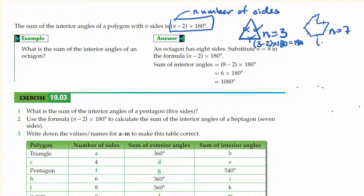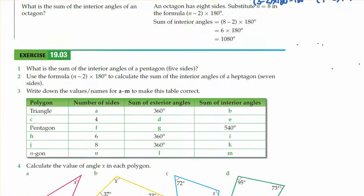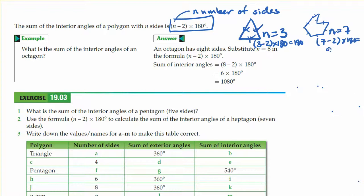And for this one, our n in this case is 7, so we'd say 7 minus 2 times 180. And when you calculate that out, you get 900 degrees.